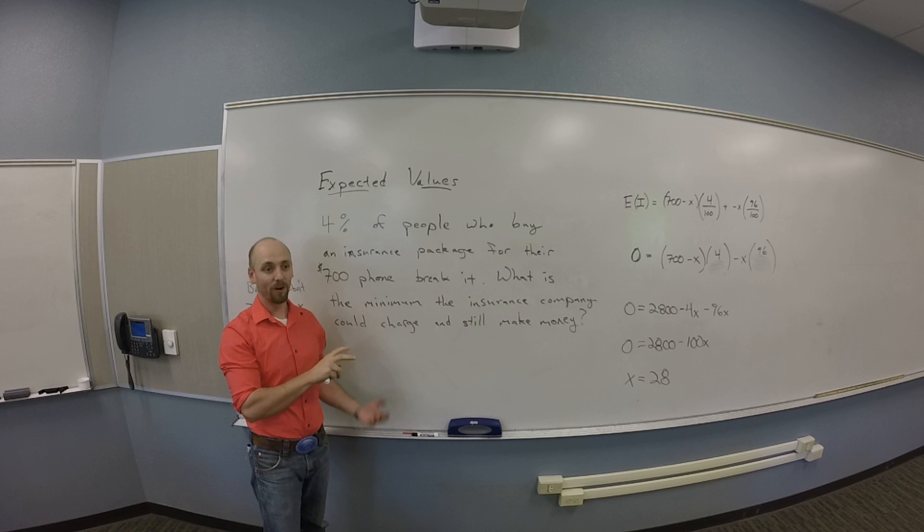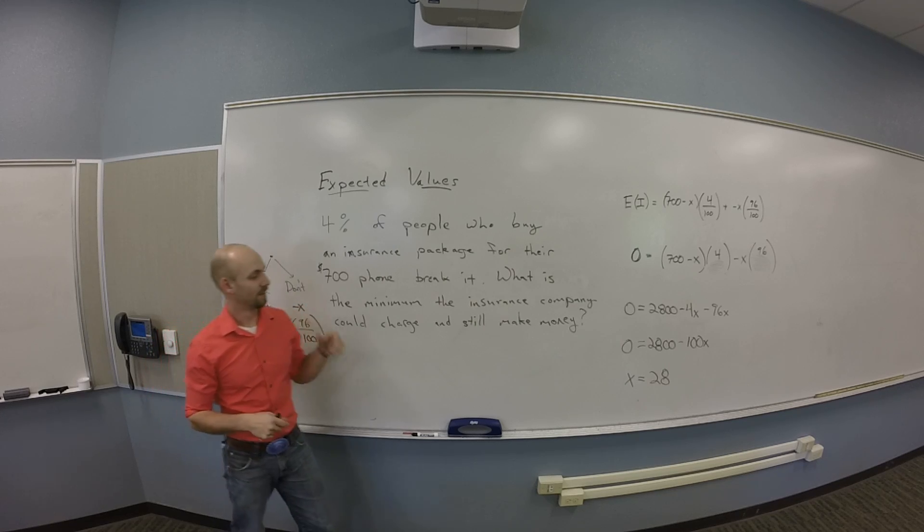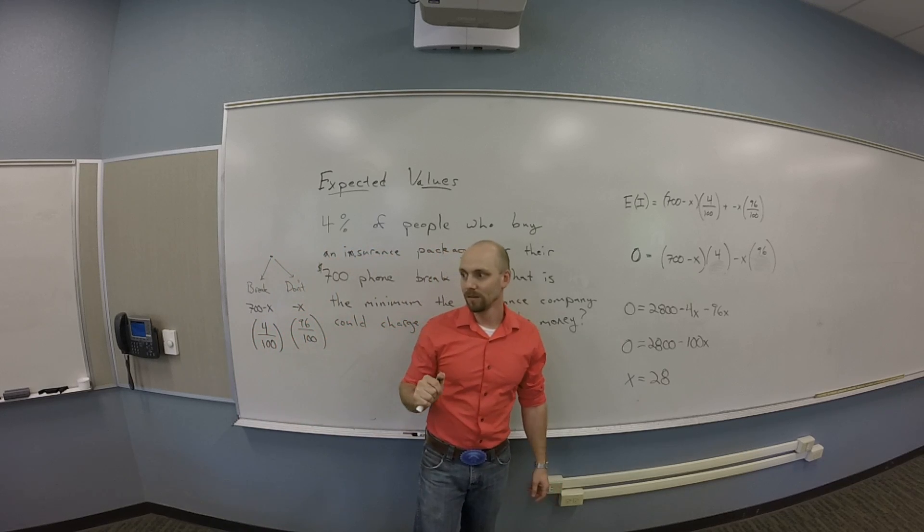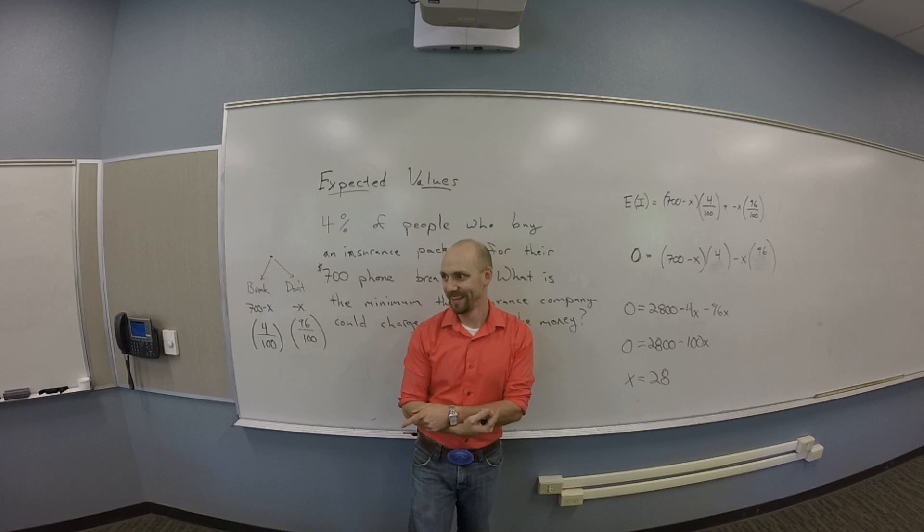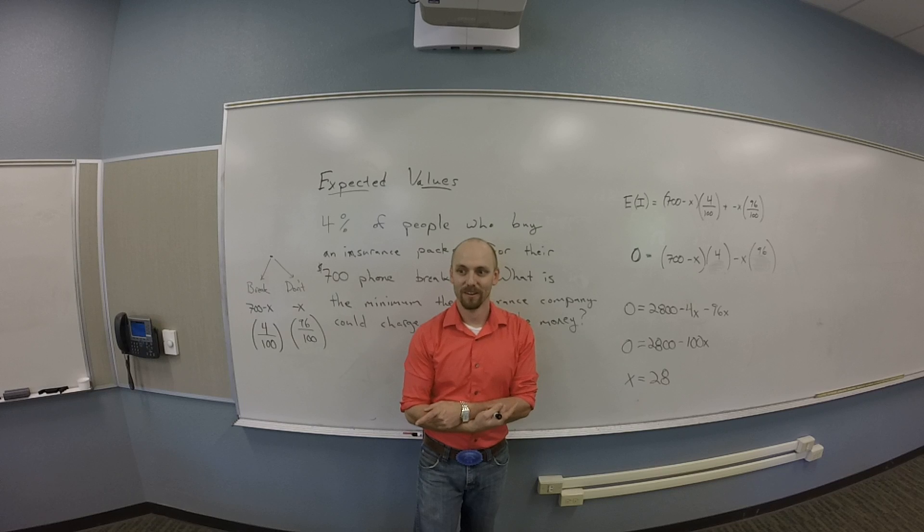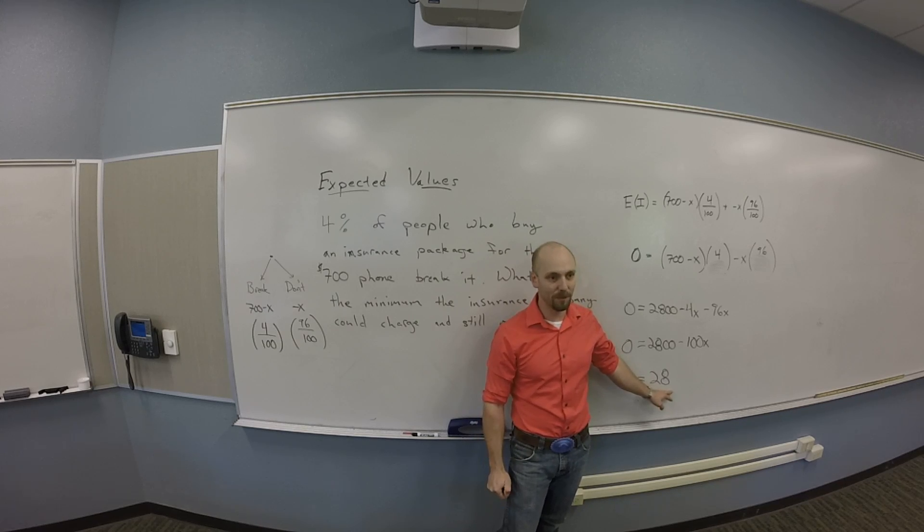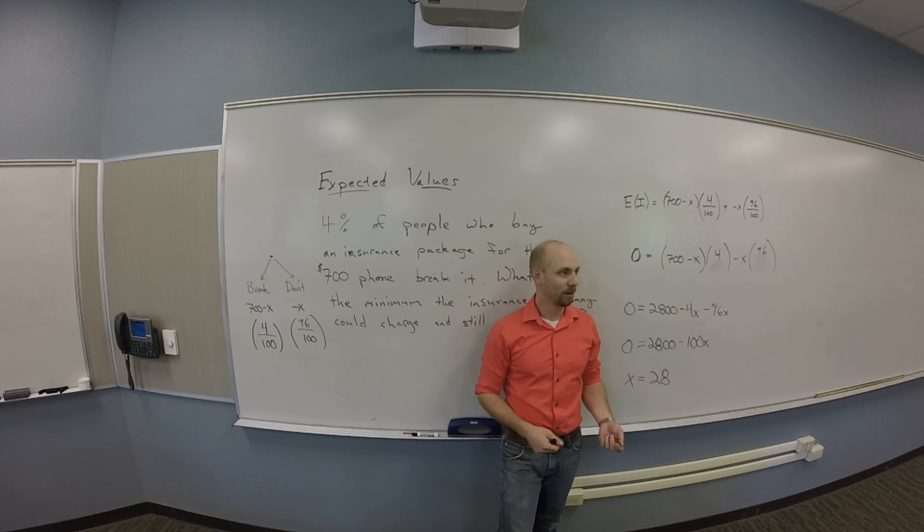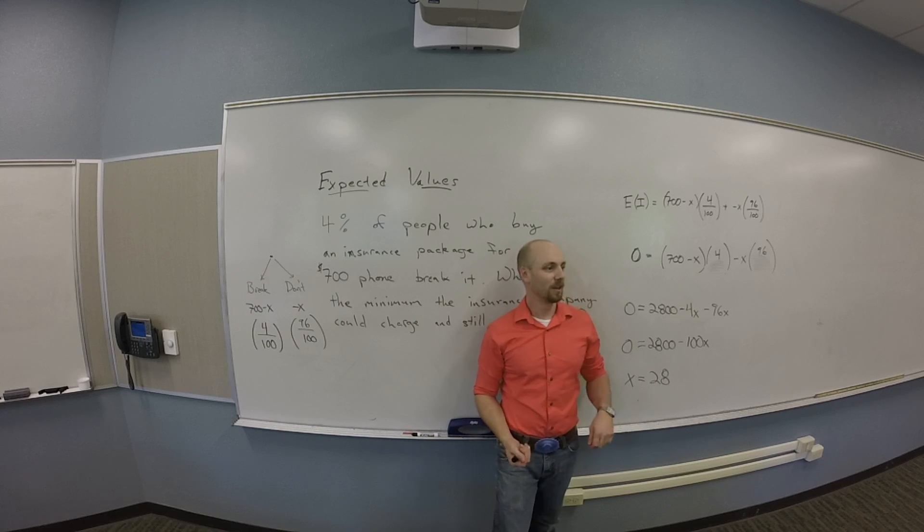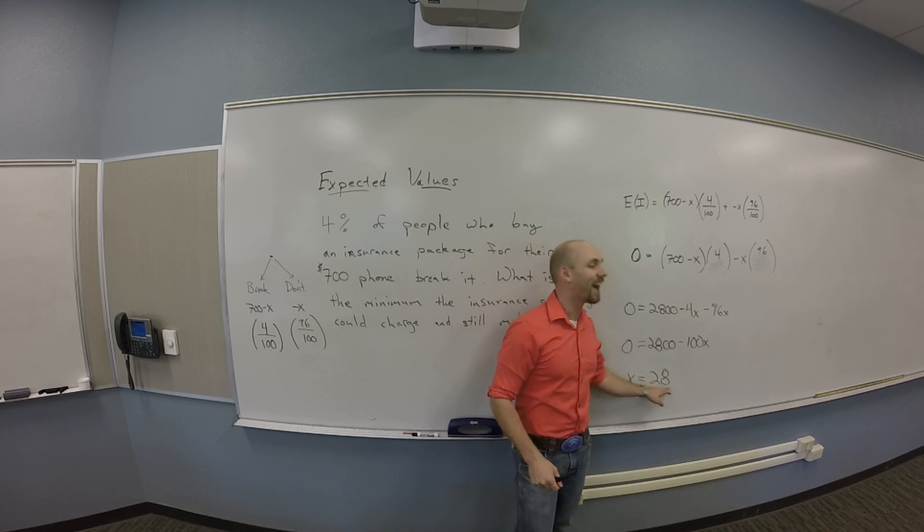So this is relatively simple, because there's only two options here. There's either it breaks and I have to pay out, or it doesn't break and I get to collect their money. So this is what they expect to spend. This is the insurance company's cost of this insurance plan. It's going to cost them 28 bucks. Like every time they sell one of these plans, they expect to shell out $28 to a consumer. They don't know which consumer it is because they never shell out exactly $28. They only shell out $0 or $700. But I still expect that every time somebody buys this plan, I'm going to give them 28 bucks.